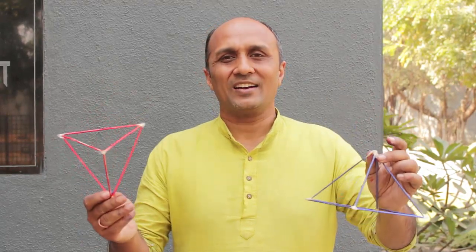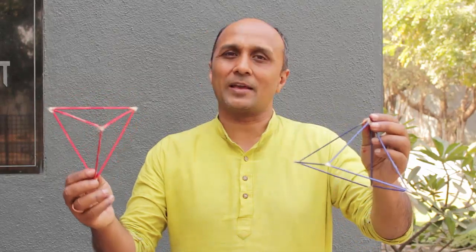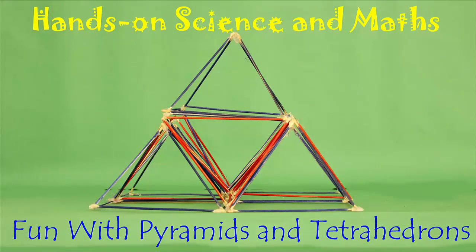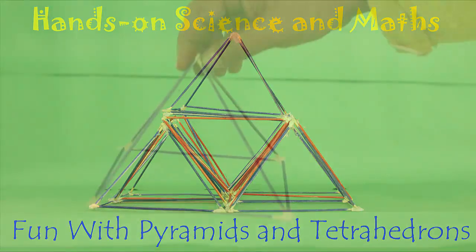For today's activity we will use 6 pyramids and 4 tetrahedrons to make a square pyramid which will be double of its original size. This experiment will also help us see the relationship between the pyramid and the tetrahedron.